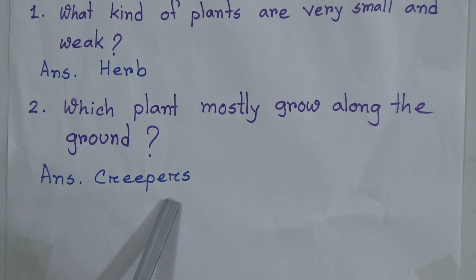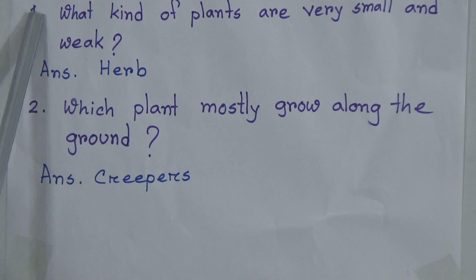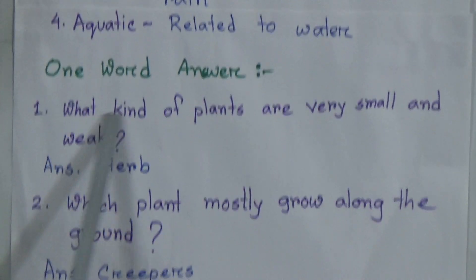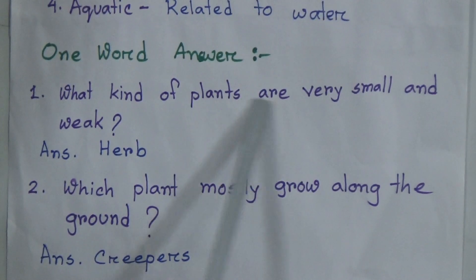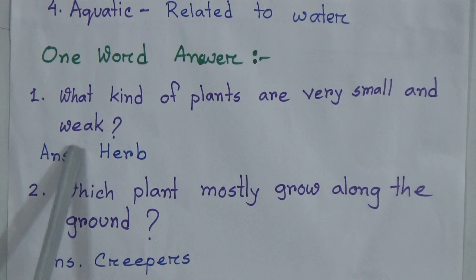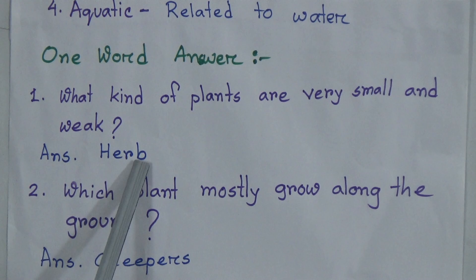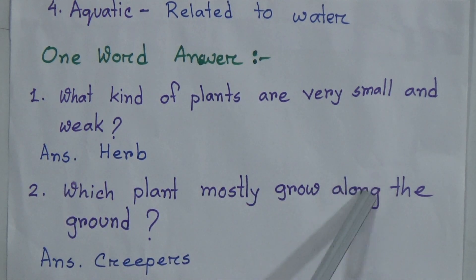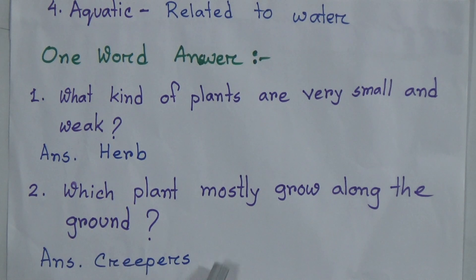Let me repeat the one-word answers. First: what kind of plants are very small and weak? Answer: herb. Second: which plants mostly grow along the ground? Answer: creepers.